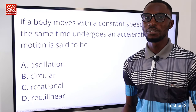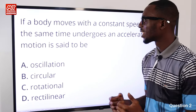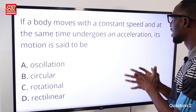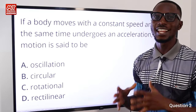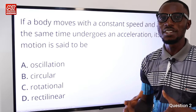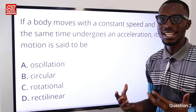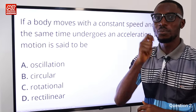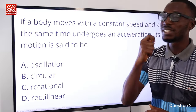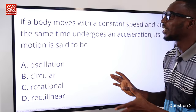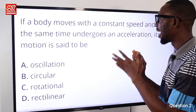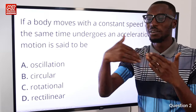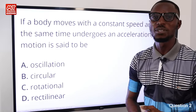Question number two: if a body moves with a constant speed and at the same time undergoes an acceleration, its motion is said to be uniform circular motion. There is constant speed but the direction is changing alongside its velocity. For example, when you're wheeling a stone — there is centripetal acceleration because direction changes constantly. So option B is very correct.